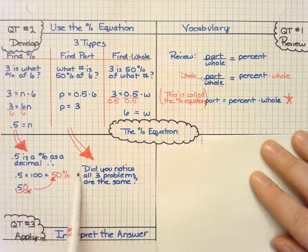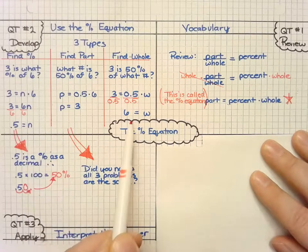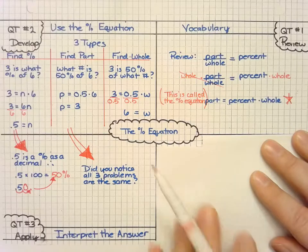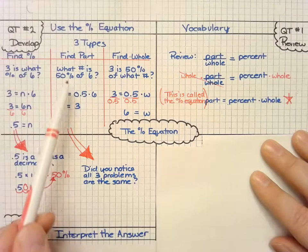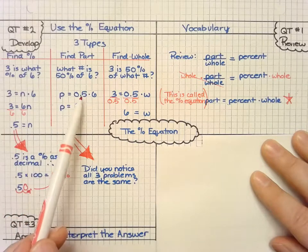And I just put a little question here: Did you notice that all three problems are the same? Also notice that we had to convert the percentage, if we knew it, into a decimal into the problem.